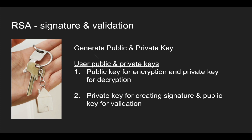The other use case, which is used for JWT validation, is for creating a signature using a private key. Earlier we were using a public key to encrypt, but here a private key is used to create a signature. Once you create a signature you share the message, the signature, and the public key — three things. Your friend can then verify whether the message came from you using the public key. So private key is used for creating a signature, and the public key is used for verifying the signature.